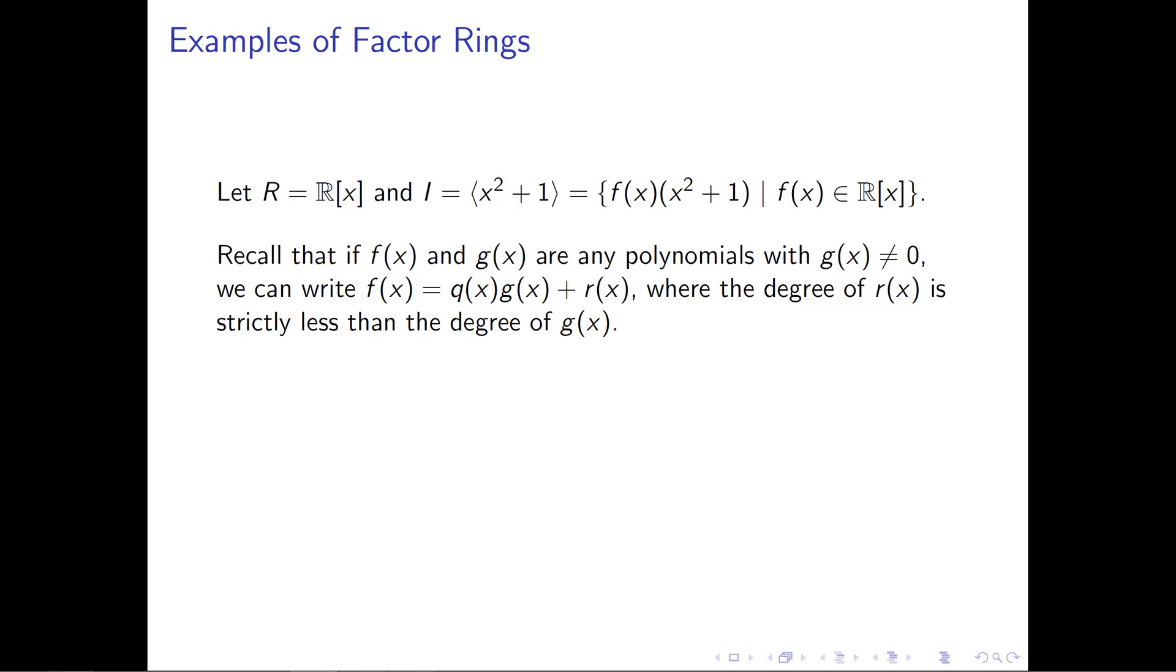All this really means is I can take the polynomial f of x, I can write it as some multiple of the polynomial g of x plus something that's left over. And the thing that's left over is going to be smaller, smaller measured by degrees, since we're working inside a polynomial ring, than the thing I'm dividing by, which is the g of x.